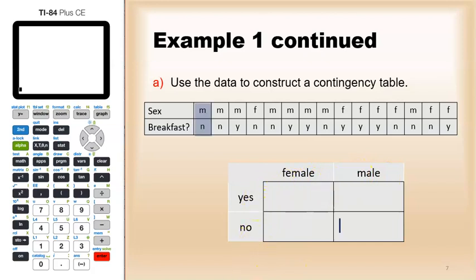Then I go through the list. The first one, male no. Male no. Male yes. Female no. Male no. Male yes. Male yes. Male no. And so on.